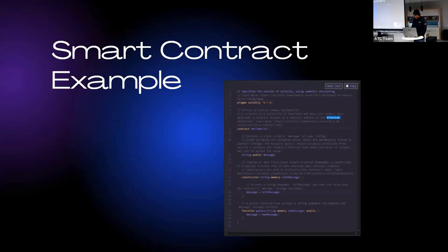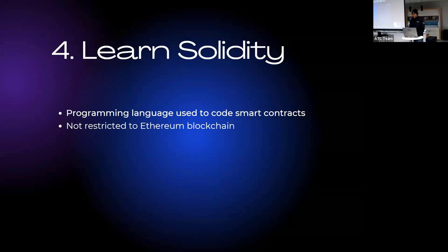A simple example of a smart contract called Hello World stores a message when created and can update that message when calling the update function. You need to learn Solidity, as it is the most common programming language used to create smart contracts. Solidity is not restricted to the Ethereum blockchain — other blockchains such as Avalanche and Polygon use it as well. It has a syntax similar to JavaScript, but is statically typed.